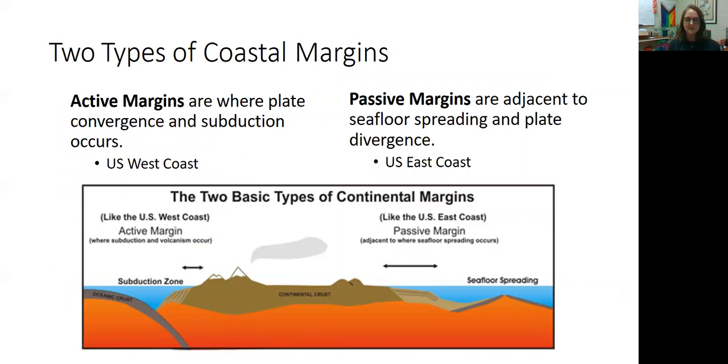All right, so putting all of this information together, talking about the different types of plate boundaries, I also want to talk about the different types of coastal margins. An active margin is anywhere where plates are actively converging, actively subducting. So an active margin is a coast right on top of a convergent boundary. For example, the U.S. west coast.